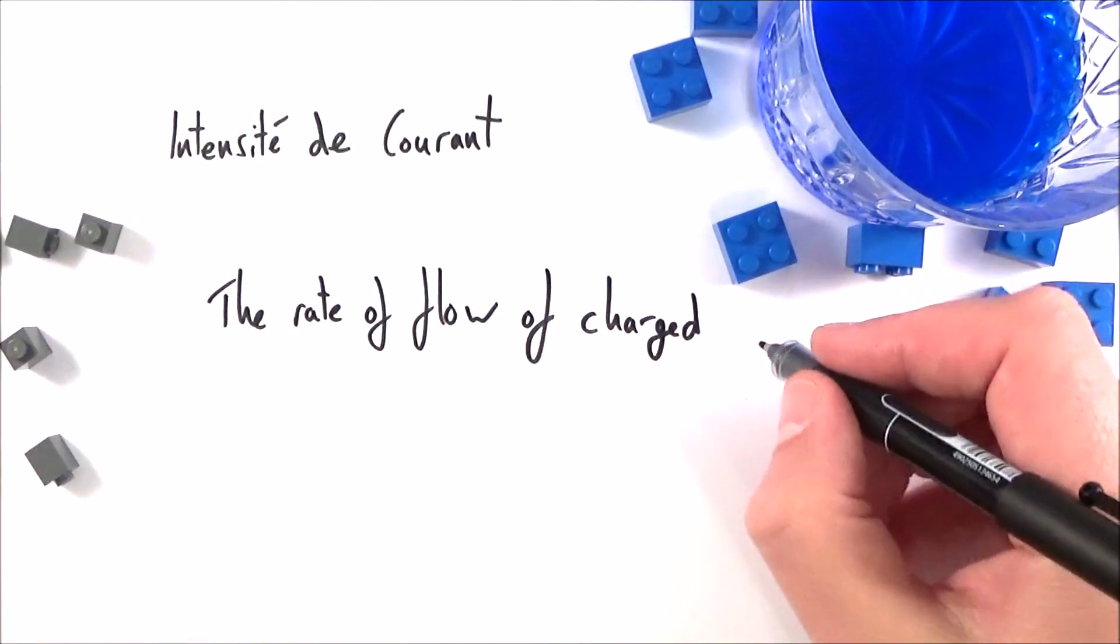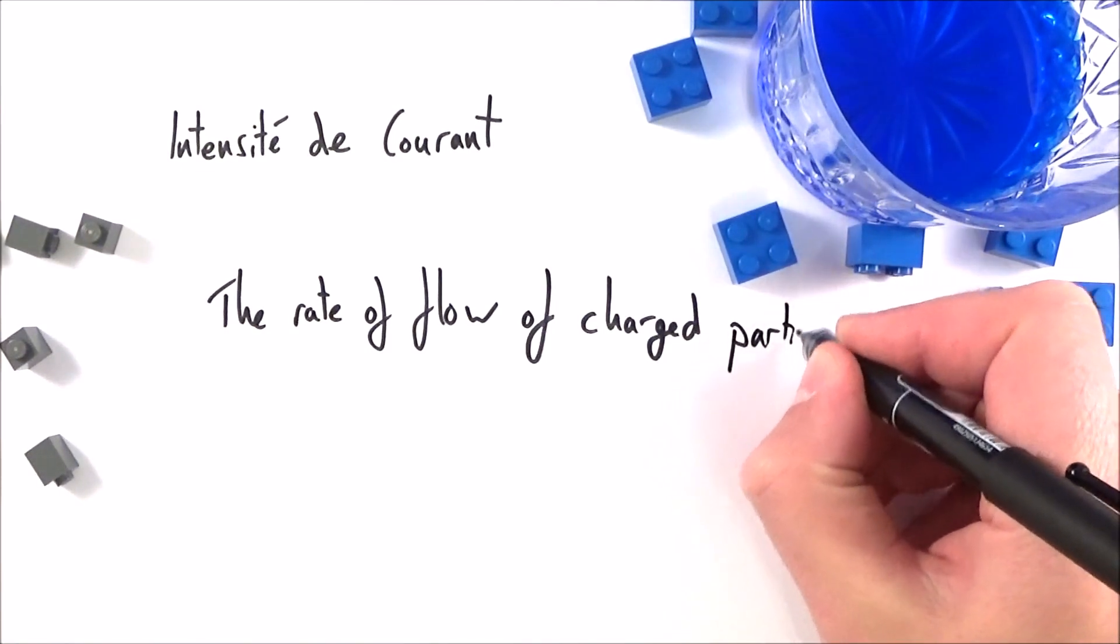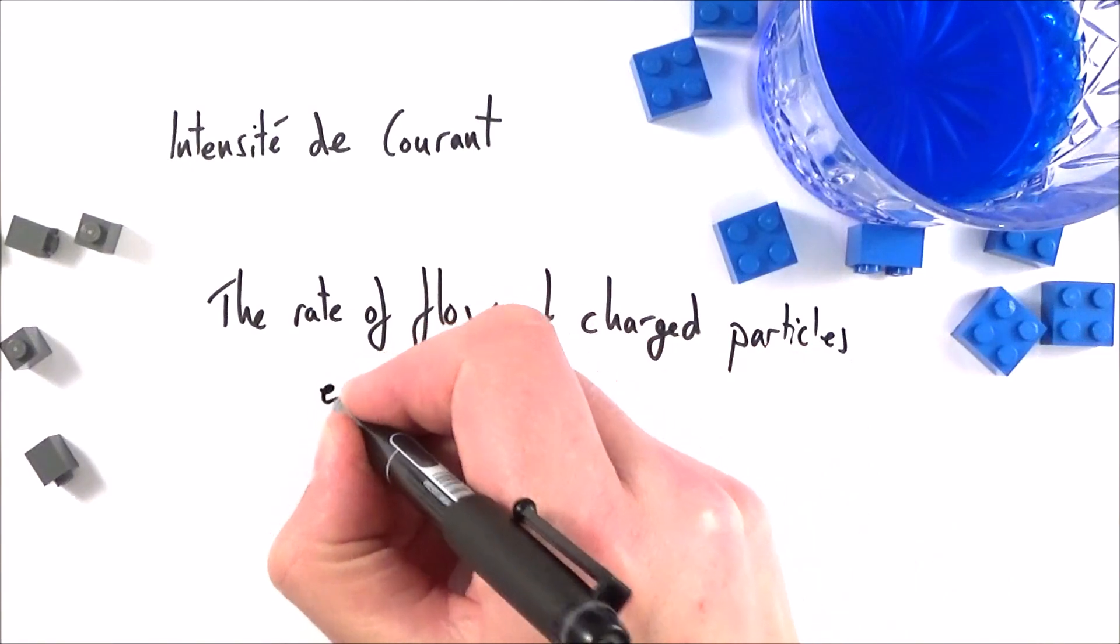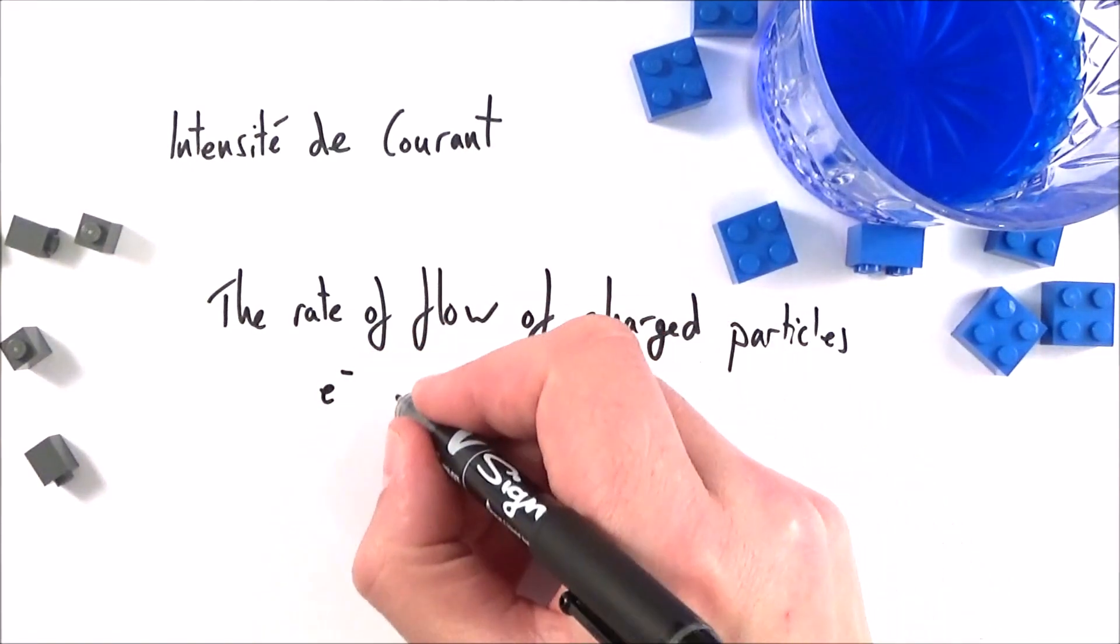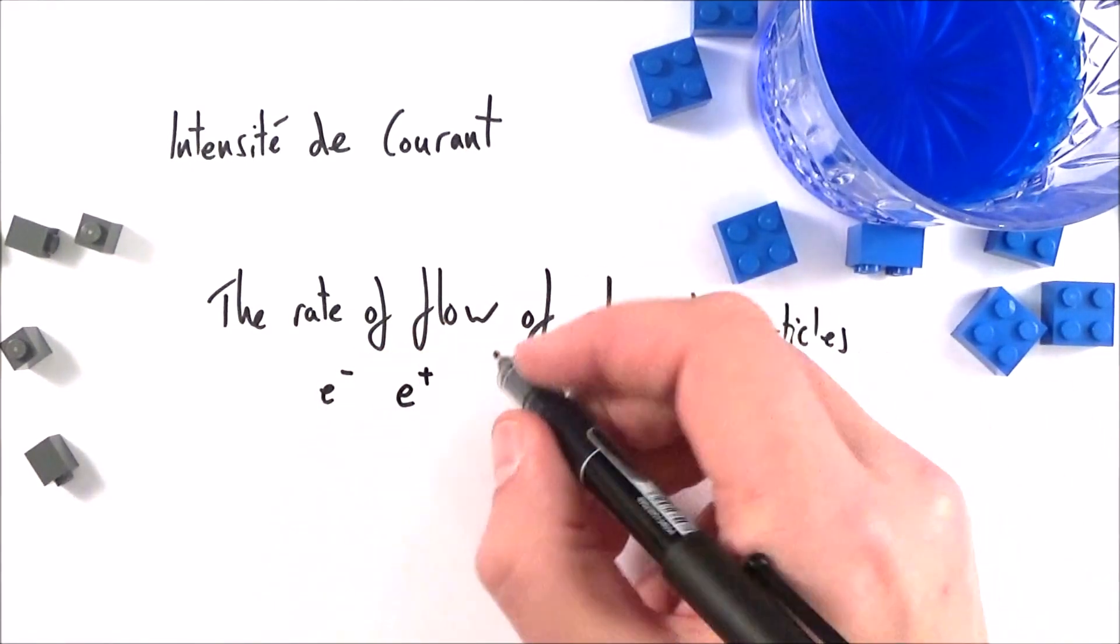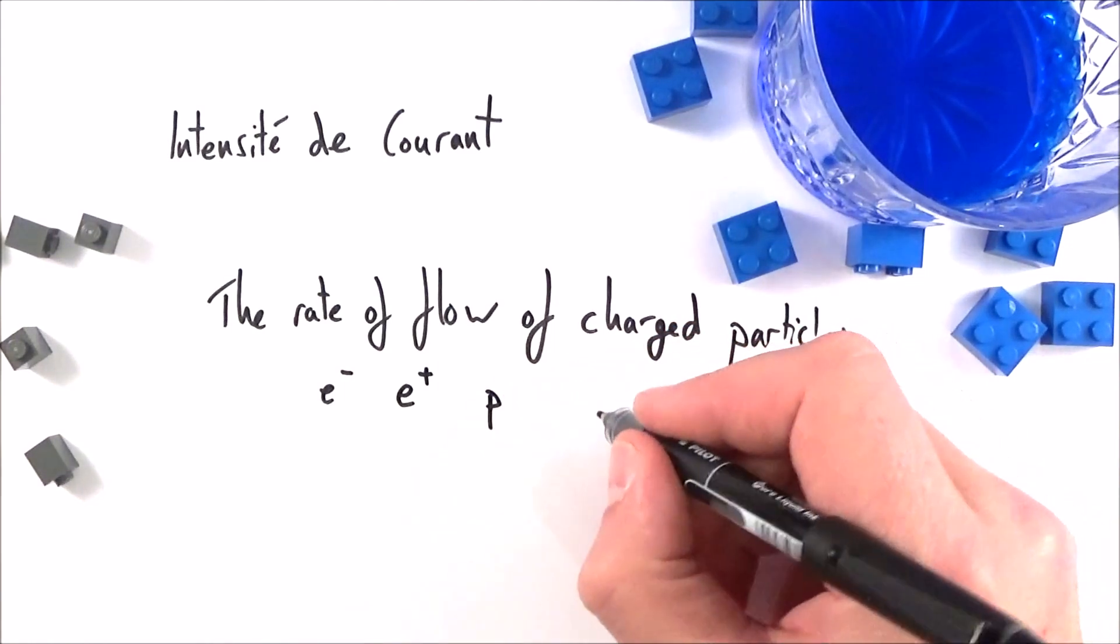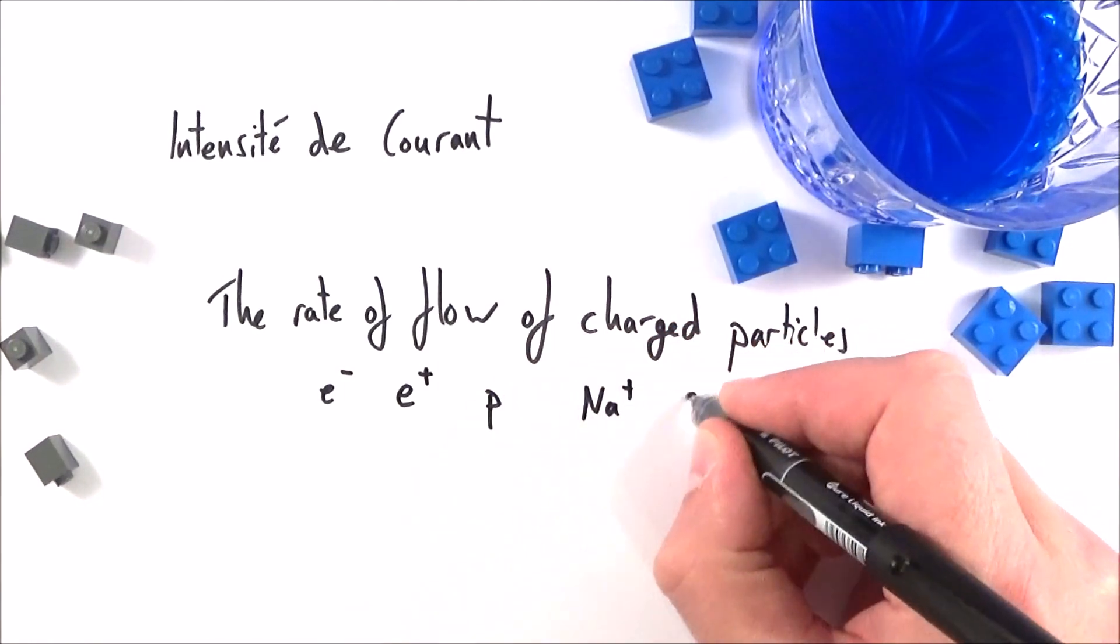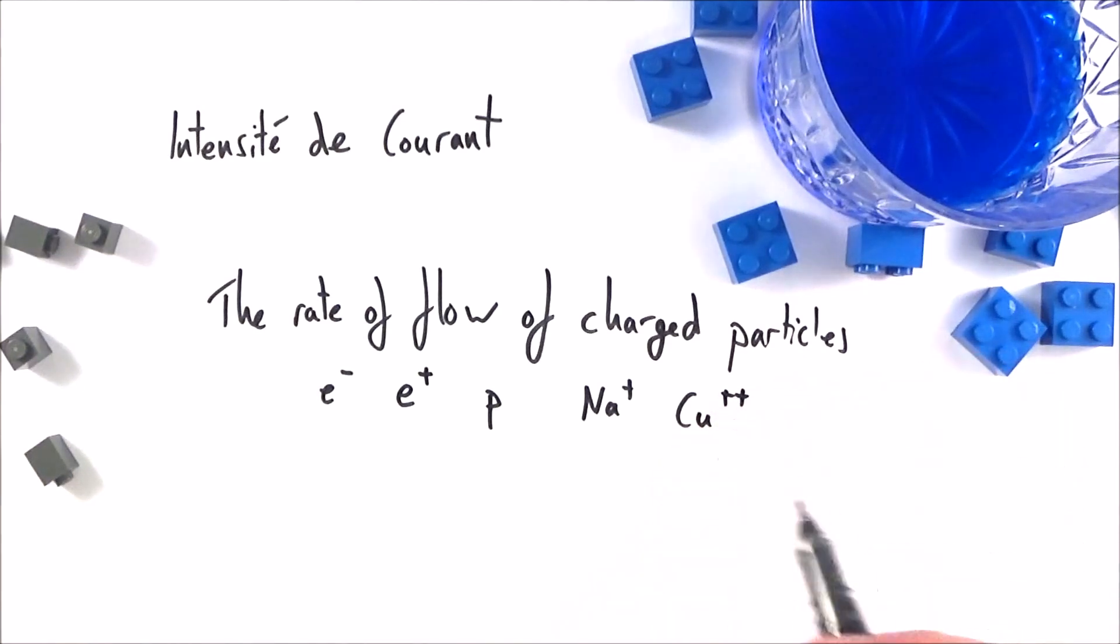So electric current is the rate of flow of charged particles. And although we normally consider the charged particles to be electrons, we can also have positive electrons or positrons, perhaps the flow of protons, or perhaps various ions like sodium or copper. It's the flow of these charged particles which makes this electric current.